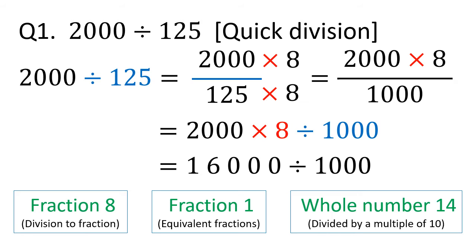You don't really need to calculate divisions by 1000 — you only need to move the decimal point 3 places to the left. 16000 can have a decimal point at the right end, and we move it 3 places to the left to get 16.000. We don't need the decimal point and the 3 zeros, so the final answer is 16.